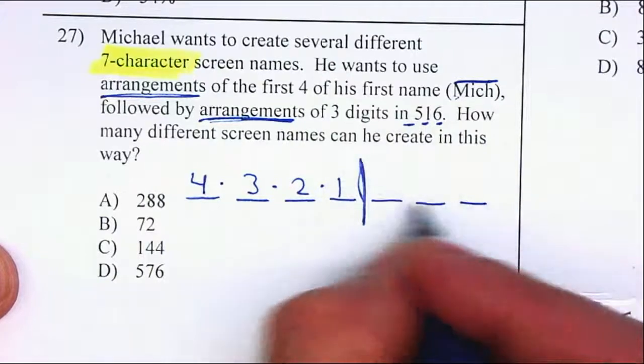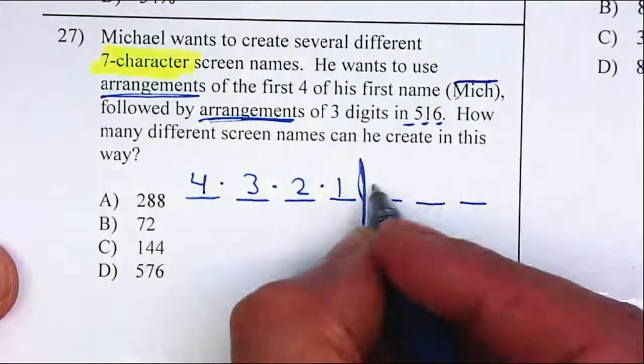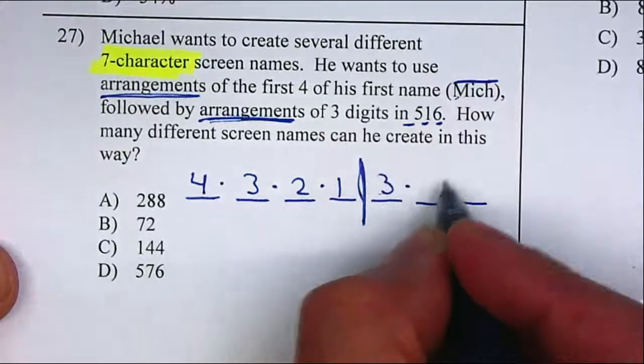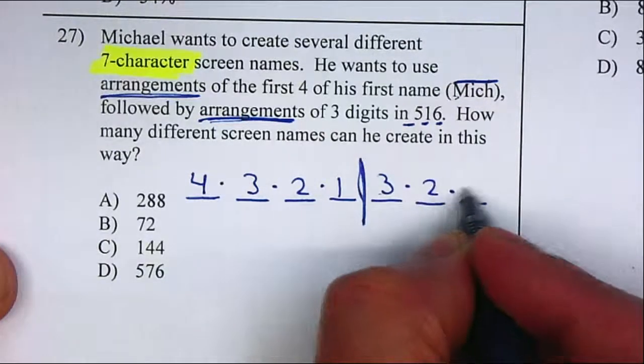So how many digits are available for the first part? For the first part, it will be three. If you place one in there, how many are available for the next one? Two, and then one.